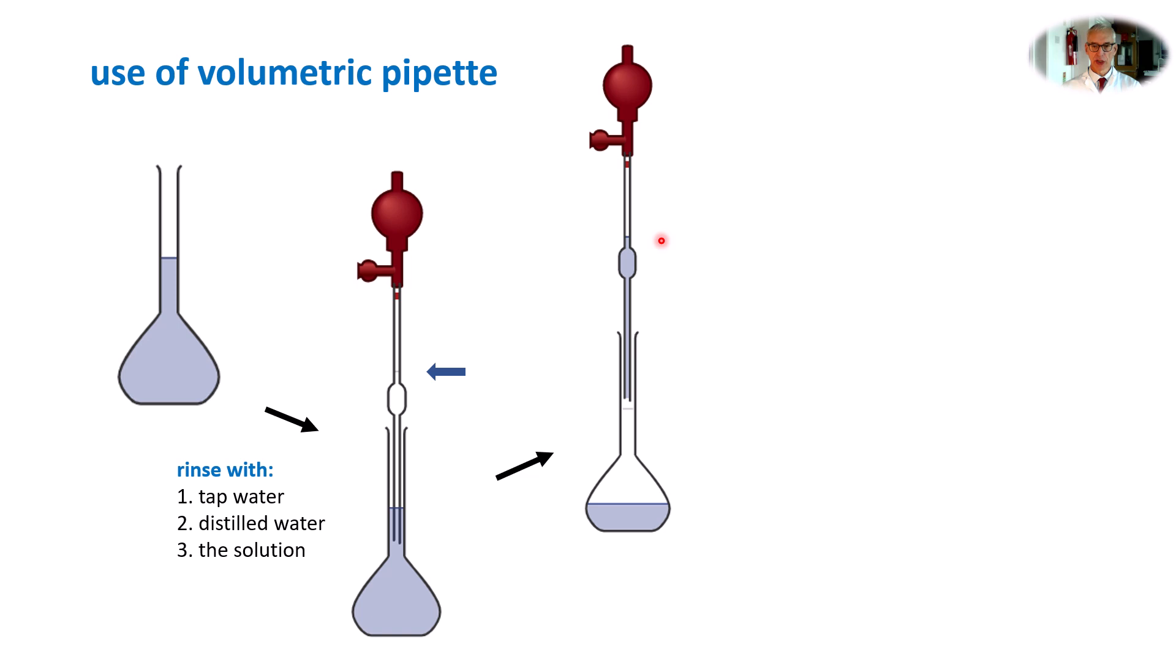Having filled the pipette to the graduation mark, you then remove from the standard flask and transfer a short distance to a conical flask, a clean conical flask. Make sure that the conical flask is close to your volumetric flask and you're not transferring any distance because we don't want any drops or any loss of solution from the pipette. My recommendation is that you remove the pipette filler and allow the pipette to drain.